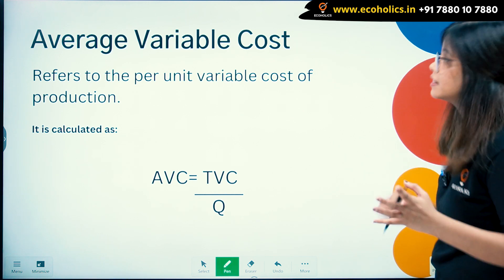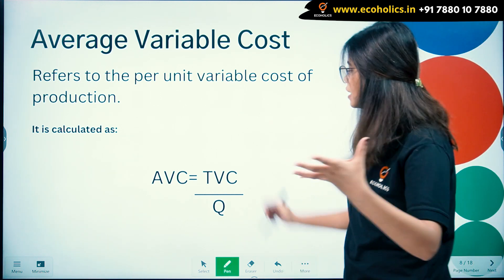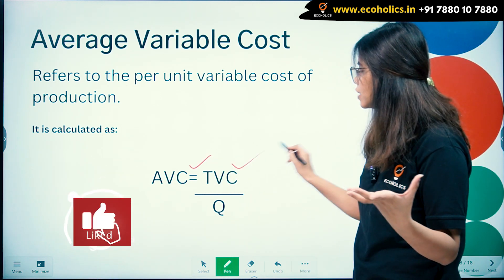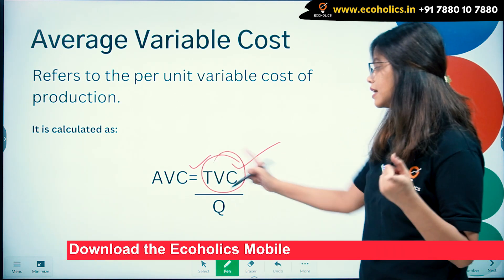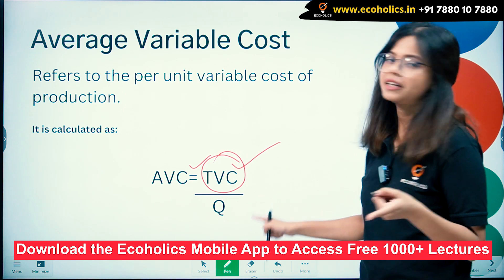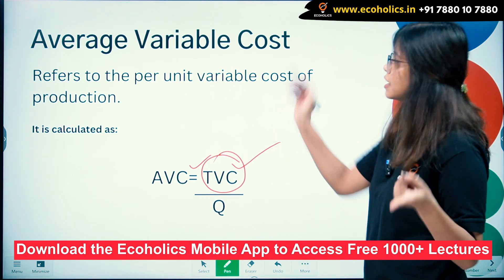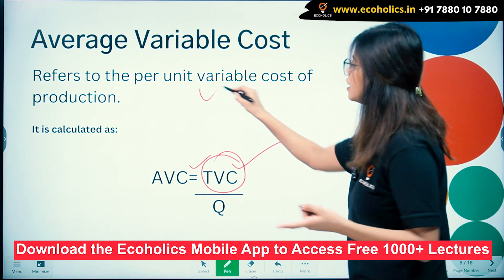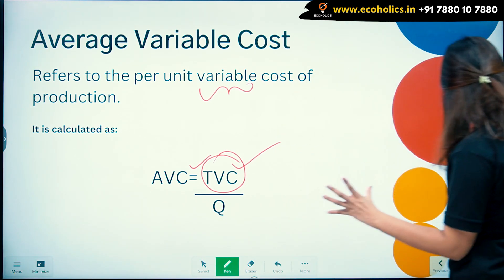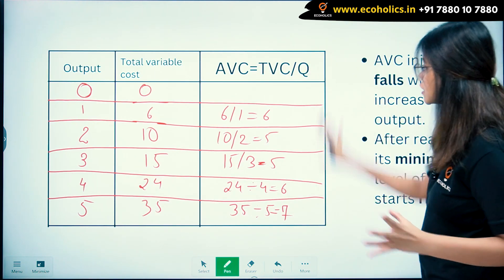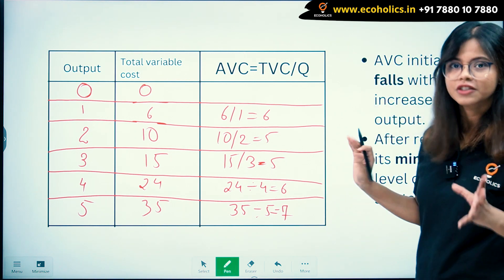Now we will be understanding Average Variable Cost, or AVC. It is calculated as TVC divided by Q. TVC divided by Q refers to the per unit variable cost of production. So now let's understand this with a schedule and the meaning of this.